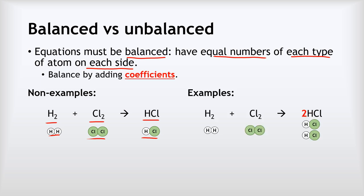So how do we balance it? What we do is add numbers in front of our species called coefficients — I've drawn them in red here to make it extra clear. In this case we put a 2 in front of the HCl, so instead of making one HCl we're making two. Now we've got two hydrogens on the left and two on the right, and two chlorines on each side — so now it's balanced and mass has been conserved.